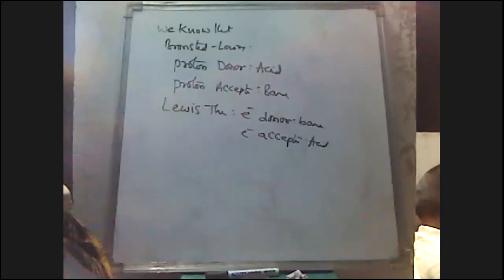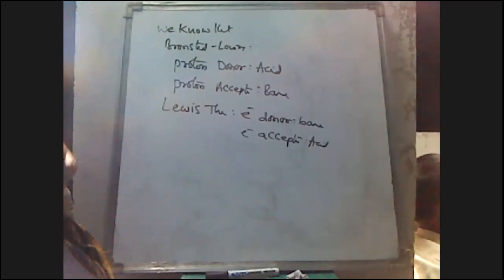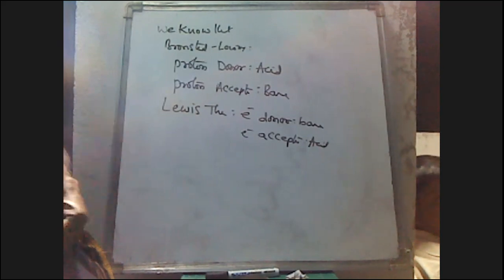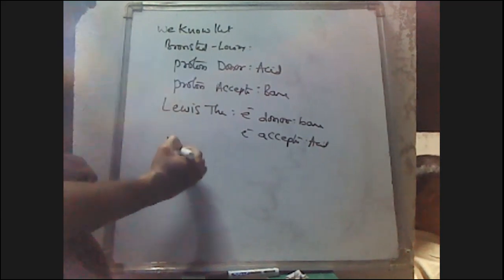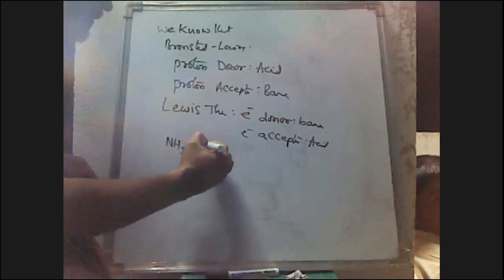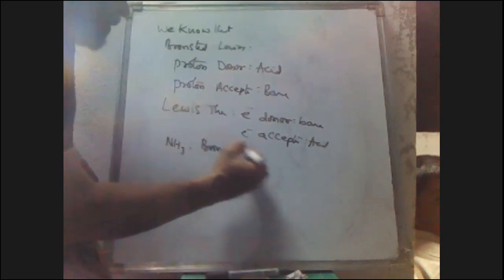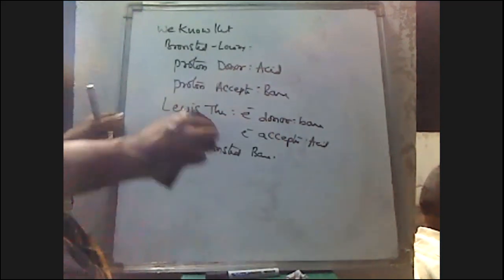In Arrhenius theory, HCl and H2SO4 are Arrhenius acids, and NaOH is an Arrhenius base. However, ammonia is not an Arrhenius base — ammonia is a Brønsted base, or Brønsted-Lowry base.